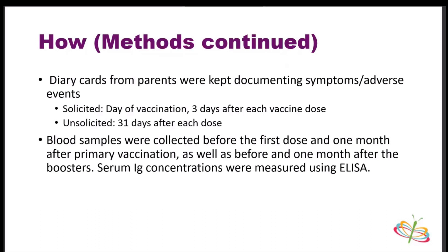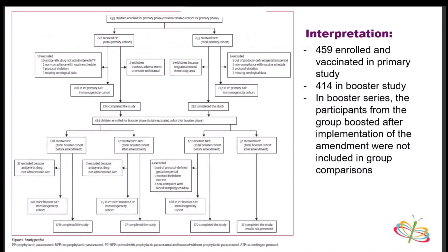Blood samples were collected before the first dose and one month after primary vaccination, as well as before and one month after the boosters. Serum immunoglobulin concentrations were measured using ELISA. There were 459 participants enrolled and vaccinated in the primary study and 414 in the booster. Within the booster series, participants from the group boosted after implementation of the amendment were not included in the group comparisons, to reduce bias.